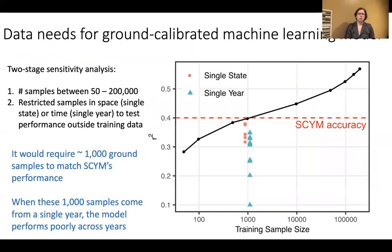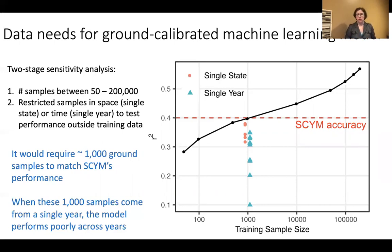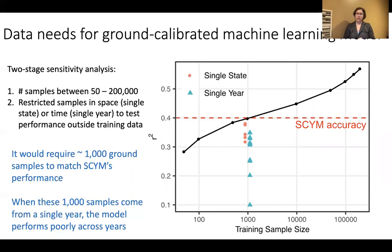Another question was what data needs would be required if you had a ground-calibrated machine learning model to perform similarly to the scalable method. We did a two-stage sensitivity analysis, first varying the number of training samples between 50 and 200,000, and then restricting those samples in space to either a single state or a single year, testing performance outside the training data across the full 11-year time frame and full region.